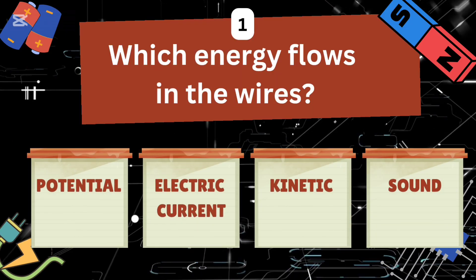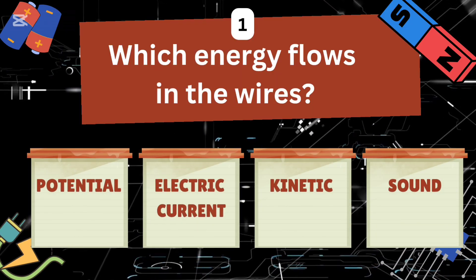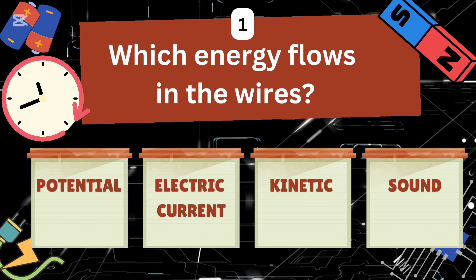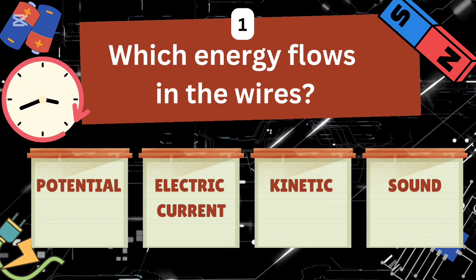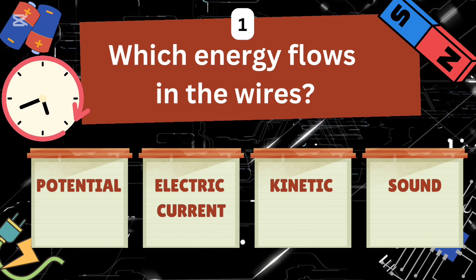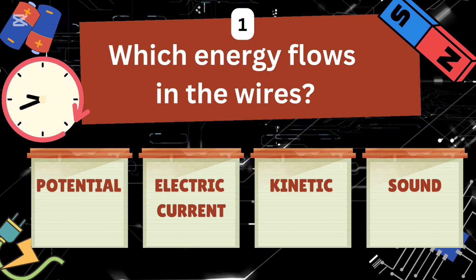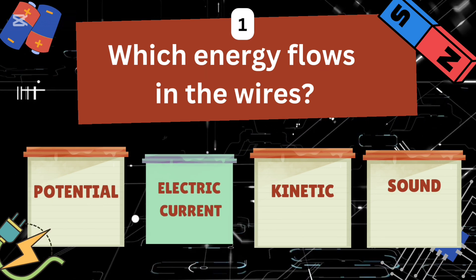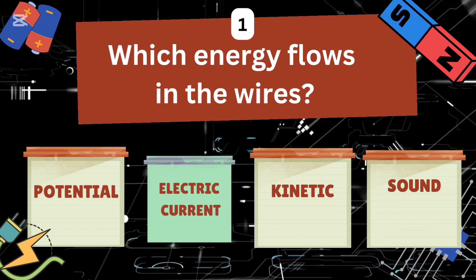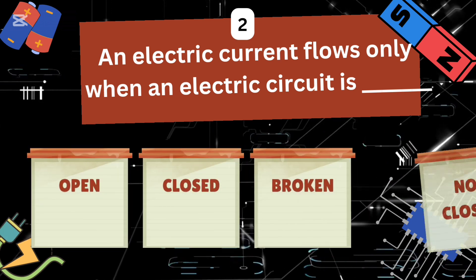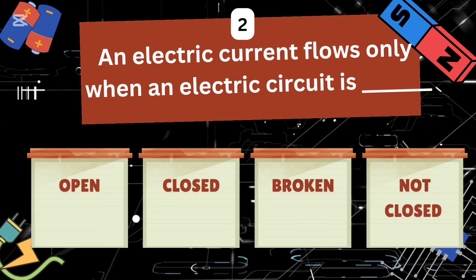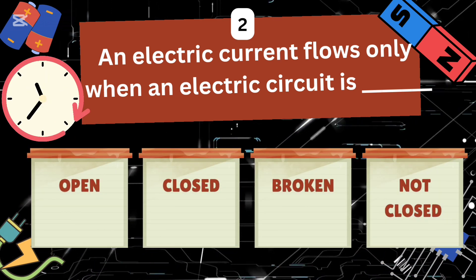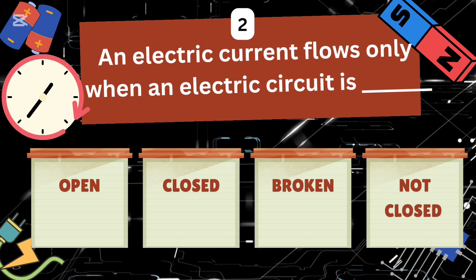Which energy flows in the wires: potential, electric current, kinetic, or sound? The right answer is electric current. An electric current flows only when an electric circuit is: open, closed, broken, or not closed?